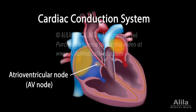The atrioventricular node, or AV node, is located on the other side of the right atrium near the AV valve. The AV node serves as the electrical gateway to the ventricles. It delays the passage of electrical impulses to the ventricles to ensure that the atria have ejected all the blood into the ventricles before the ventricles contract.